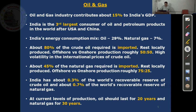India has about 0.3% of the world's recoverable reserves of crude oil and about 0.7% of natural gas. At current levels of production, oil should last for 20 years and natural gas for 30 years. But India is a fast-growing economy, so demand for oil and gas will increase, meaning reserves will get over much sooner. This tells us there is a crisis facing India. It is imperative that we increase domestic oil and natural gas production and also look for more renewable sources of energy.